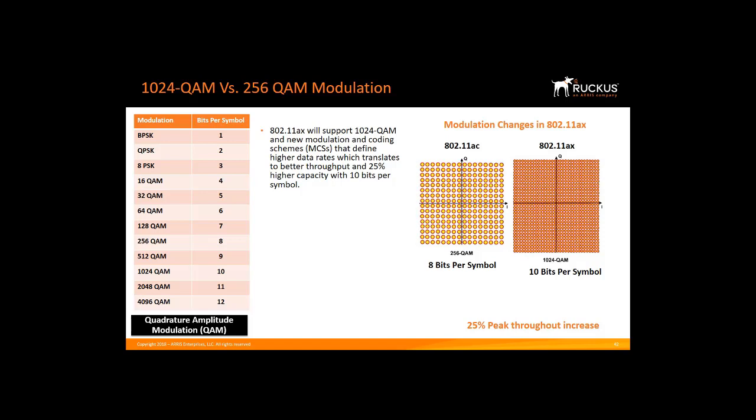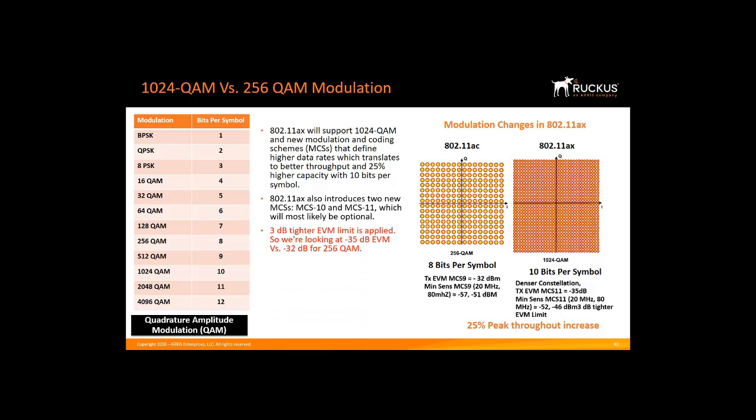Applications such as 4K video streaming are expected to drive internet traffic to 278 petabytes per month by 2021. 11AX also introduces two new modulation coding schemes, MCS-10 and MCS-11, which will most likely be optional. Due to the denser constellation, a 3 dB tighter EVM limit is applied — a minus 35 dB EVM versus minus 32 dB for 256 QAM. 1024 QAM can only be used with 242 subcarriers or tones or larger, meaning at least a full 20 MHz channel will be needed for 1024 QAM.